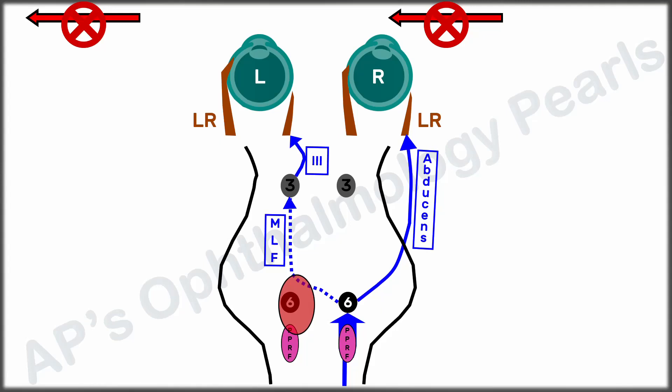So the left eye can neither abduct because of the gaze palsy nor adduct because of the adduction deficit of the INO. The right eye cannot adduct because of the gaze palsy. The only movement possible is abduction of the right eye, and this movement also has nystagmus because of the INO.